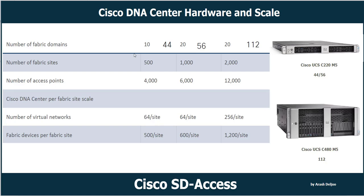Additional scale details: number of fabric sites — 500 / 1,000 / 2,000. Number of fabric domains — 10 / 20 / 20. Number of access points — 4,000 / 6,000 / 12,000. Number of virtual networks: 64 per site for both entry and mid-size, and 256 per site for large scale. Finally, fabric devices per fabric site: 500 for entry size, 600 for mid-size, and 1,200 for large.